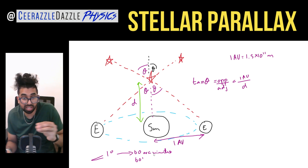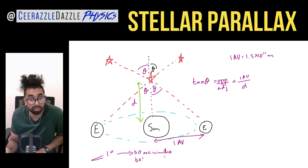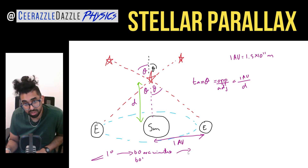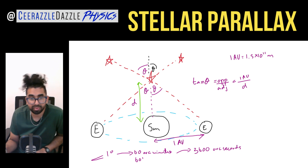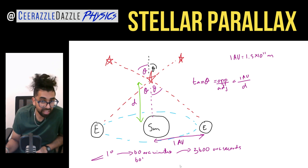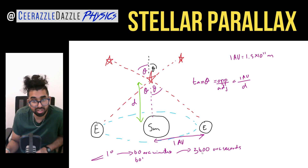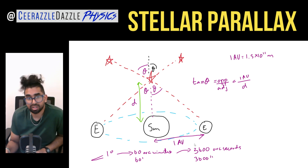We're going to split every single arc minute into another 60 components. So within every single arc minute, there's going to be an arc second. These are just alternative measurements for an angle — nothing to do with time. So within one degree, there are going to be 3,600 arc seconds. Don't forget: in one degree there are 60 arc minutes, and within every arc minute there are 60 arc seconds. Therefore in one degree there are 3,600 arc seconds. The symbol double dash means arc seconds.